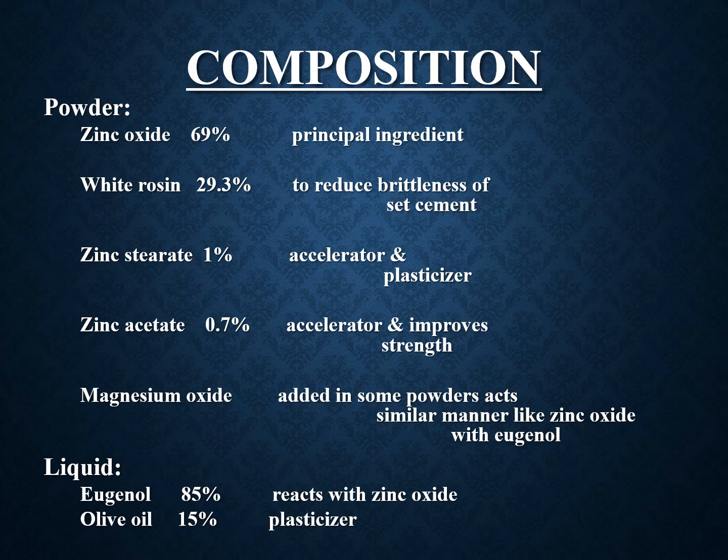Coming to the composition — these are details you need to memorize. The powder contains: zinc oxide at 69%, which is the principal ingredient; white rosin at 29.3%, which reduces brittleness; zinc stearate at 1%, an accelerator and plasticizer; zinc acetate at 0.7%, an accelerator that improves strength; and magnesium oxide, which acts similarly to zinc oxide. The liquid contains eugenol at 85%, which reacts with zinc oxide, and olive oil at 15%, which acts as a plasticizer.